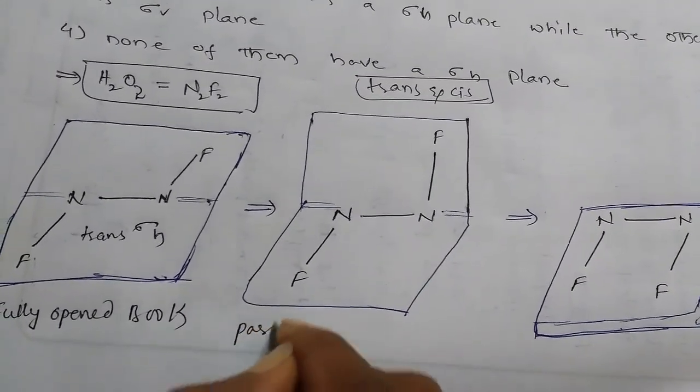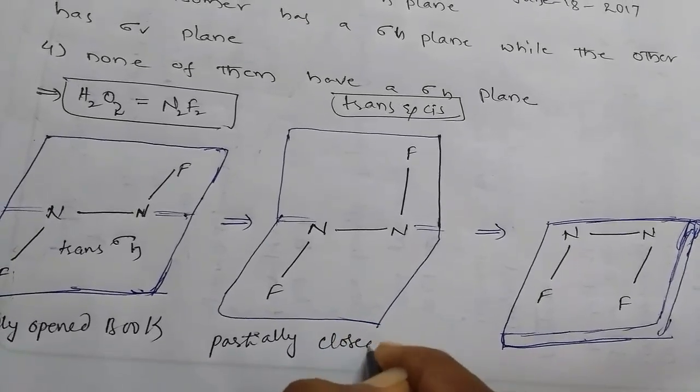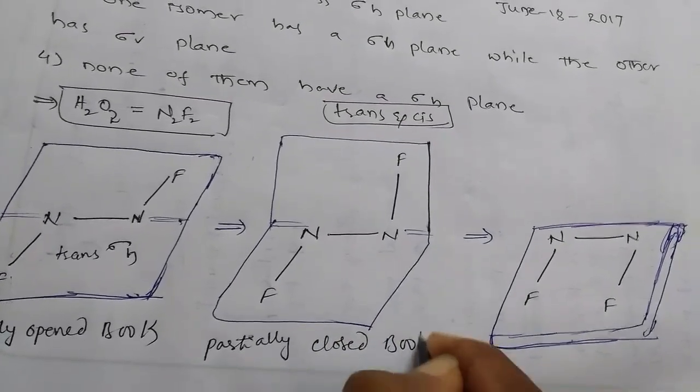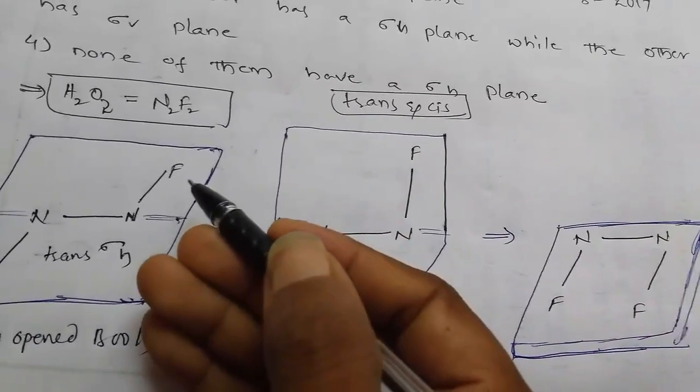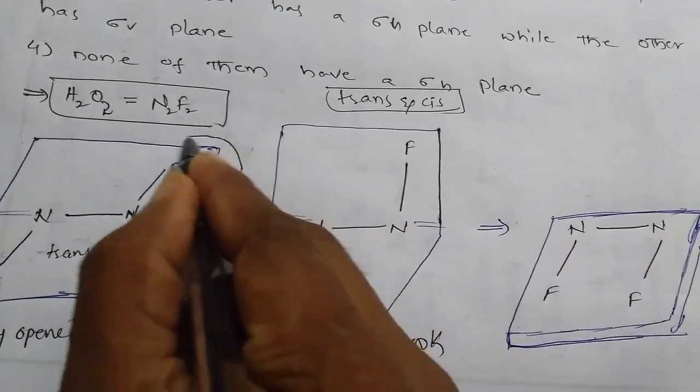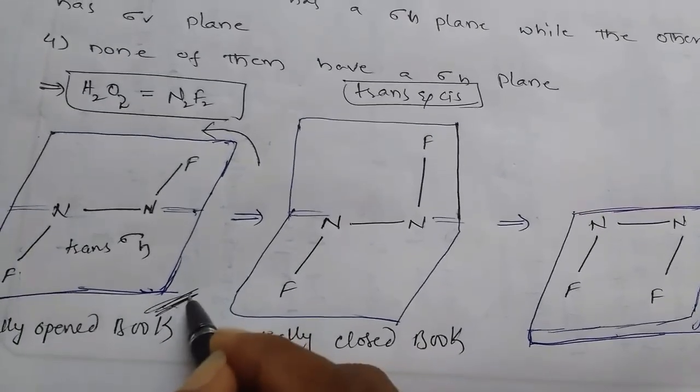Next, if you observe, this is partially closed book-like structure. That means this fluorine gets up, this side is getting up towards it.